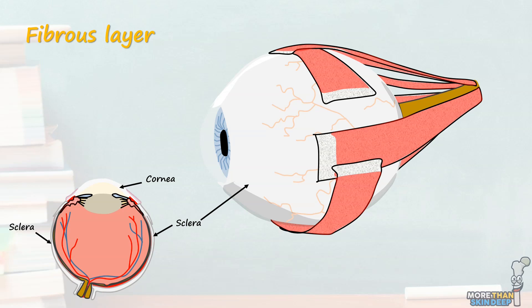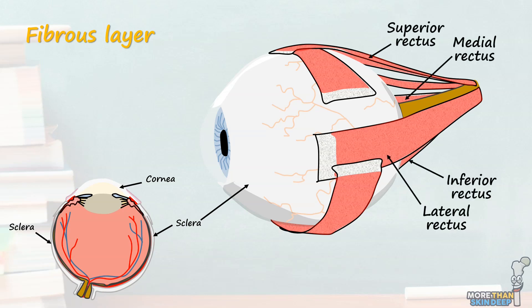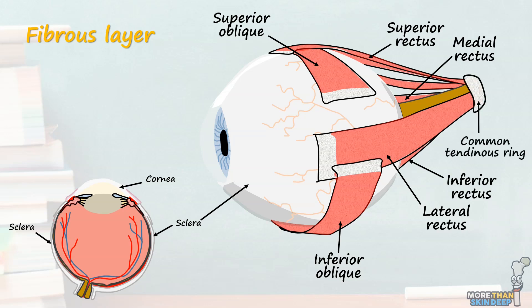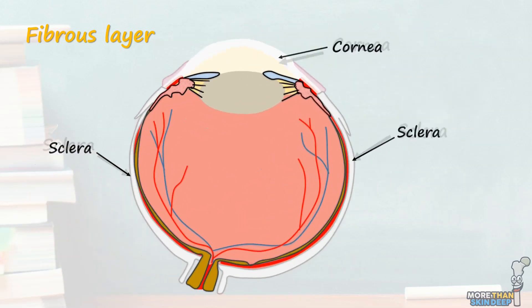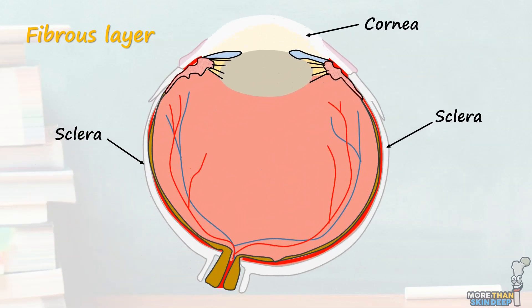The sclera's main functions include providing shape to the eye and allowing attachment of the extraocular muscles. The extraocular muscles lie external to the eye and allow voluntary and coordinated movement of both eyes. They consist of four recti muscles and two oblique muscles. The four recti muscles originate from the common tendinous ring, which is a fibrous ring of connective tissue surrounding the optic canal at the posterior apex of the orbit. The sclera also fuses with the dura and arachnoid sheaths of the optic nerve, which continues in the optic canal. To allow the optic nerve to leave the eye, the sclera has small holes and is weakened in an area known as the lamina cribrosa.